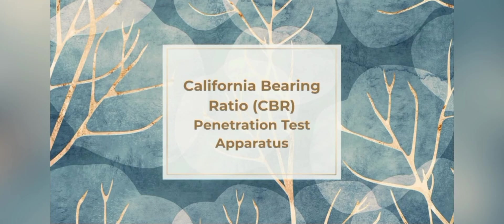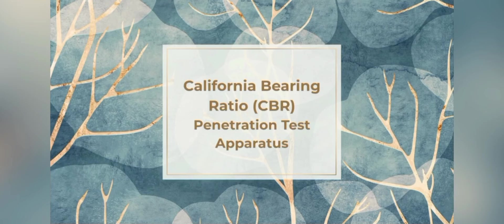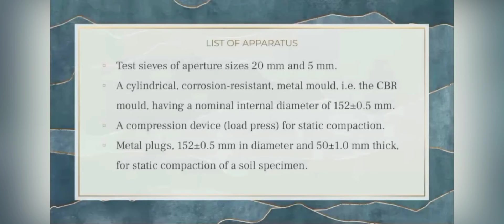Without further ado, basically there are 12 different apparatus needed in order to execute the test. The first apparatus would be test sieves of aperture sizes of 20 millimeters and 5 millimeters.